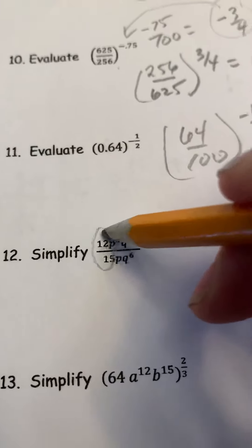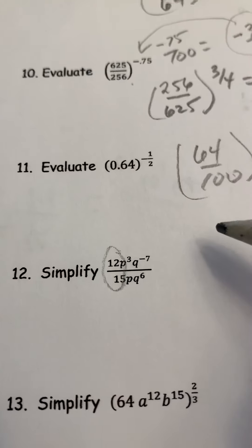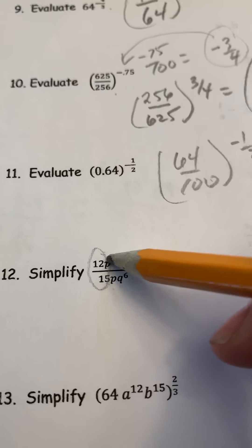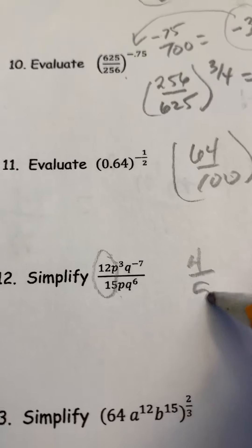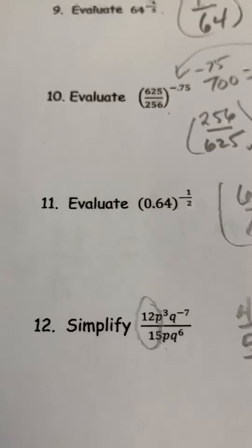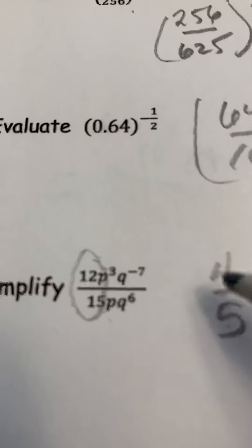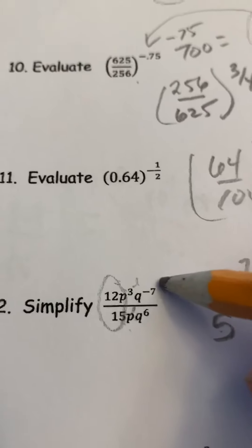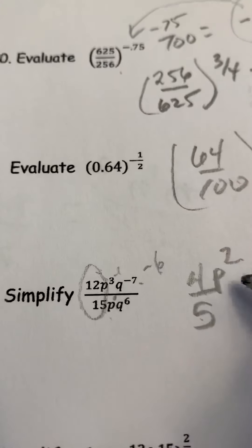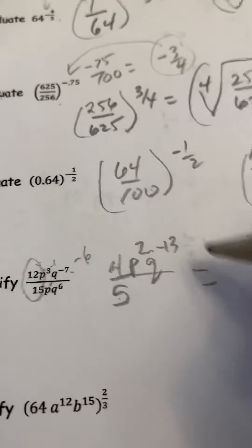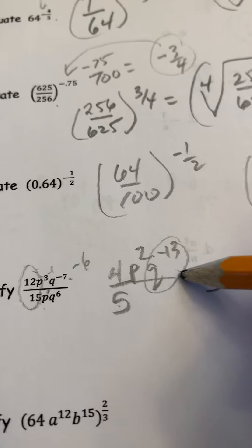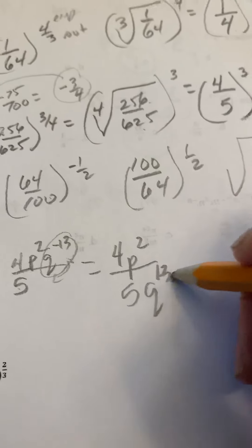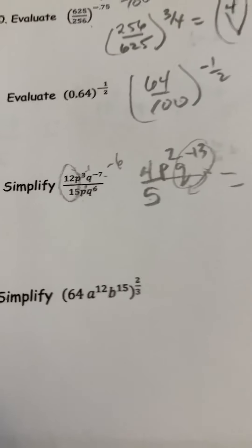Now simplify. The numerical coefficients — 15 doesn't divide equally into 12, so we go back to grade 9 roots. The biggest number that goes into both 12 and 15 is 3, so we get four fifths. For the variables: for the p's, there's an invisible exponent of 1 on the bottom, so 3 minus 1 gives p squared in the numerator. For the q's, negative 7 take away 6 more gives negative 13. Since that can't stay, we move it to the denominator, so q to the exponent 13 on the bottom becomes positive.